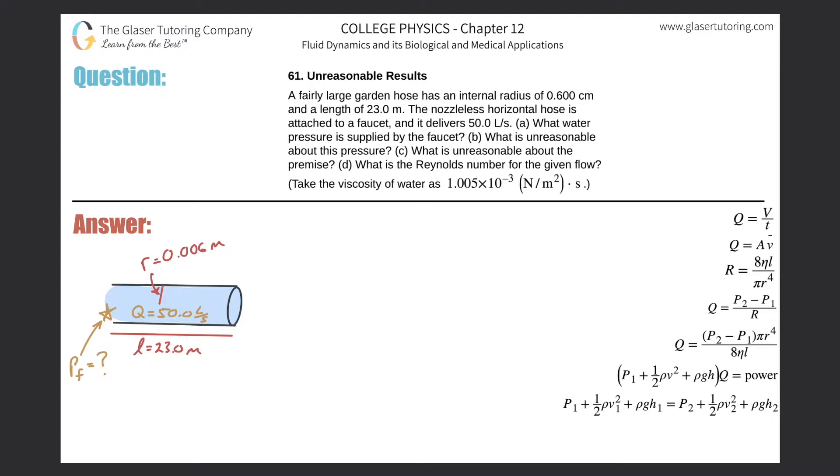Number 61, unreasonable results. A fairly large garden hose has an internal radius of 0.6 centimeters and a length of 23 meters. The nozzleless horizontal hose is attached to a faucet and it delivers 50 liters per second.